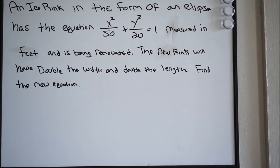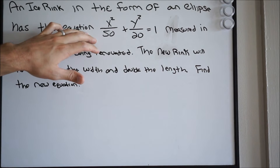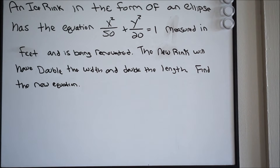So we have an ice skating rink being renovated — it's going to have double the width and double the length. They give us the equation of the ellipse. When we're dealing with an ellipse, we need to determine whether we're dealing with a horizontal or a vertical ellipse, meaning does it have a horizontal major axis or a vertical major axis.